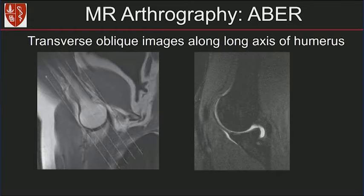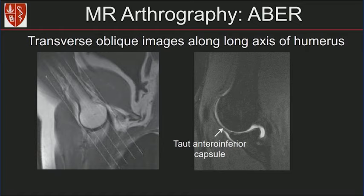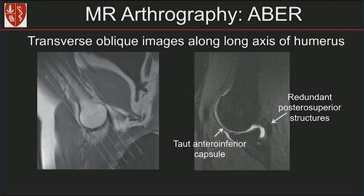Here's an image of the ABER. We image the ABER sequence along the long axis of the humerus. Notice the taut antero-inferior joint capsule in this case, and then the postero-superior structures become redundant on this sequence.